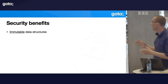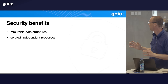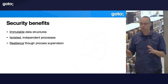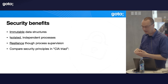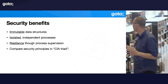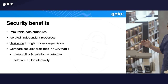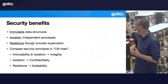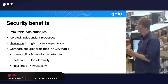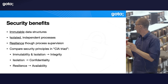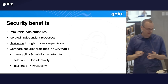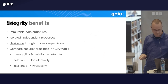What are the security benefits? I mentioned immutable data structures, isolated processes, and resilience and fault tolerance. Do these words remind you of something? In security, some very important principles are often called the CIA triad: integrity, confidentiality, and availability. Those features I mentioned map pretty easily into those concepts. Immutability and isolation can help ensure integrity. Isolation can help implement confidentiality. And resilience can provide availability. Let's look at each of these in a bit more detail.